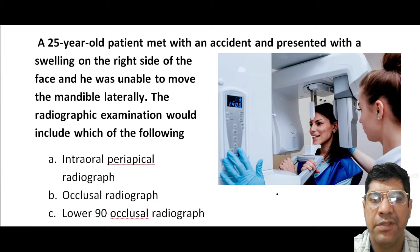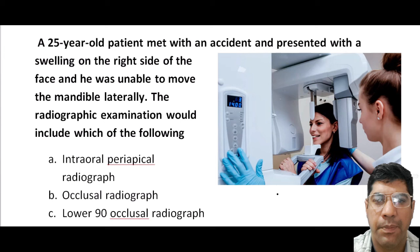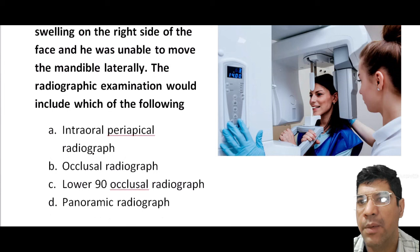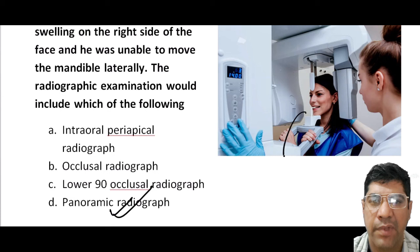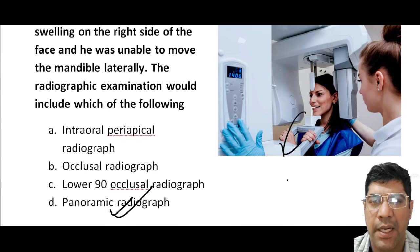A 25-year-old patient who met with an accident presents with swelling on the right side of the face and is unable to move the mandible laterally. Radiographic examination should include panoramic imaging, which provides a broad view of the entire maxillofacial region. It helps identify fractures, dislocations, and other injuries to the jaw and facial bones, and is useful to assess the overall condition of the mandible and adjacent structures in trauma cases.